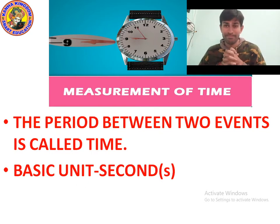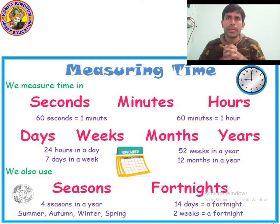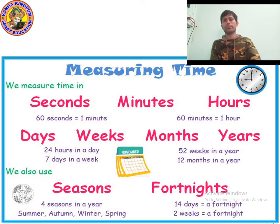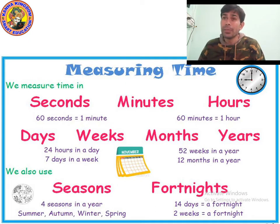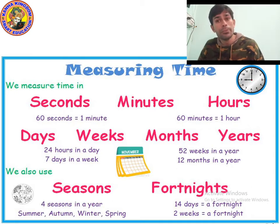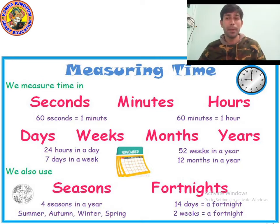There are different units to measure time. We measure time in seconds, minutes, hours, days, weeks, months, years, seasons, and fortnights. Minutes and seconds are smaller units, while hours is a bigger unit. One minute is equal to 60 seconds, and one hour is equal to 60 minutes.